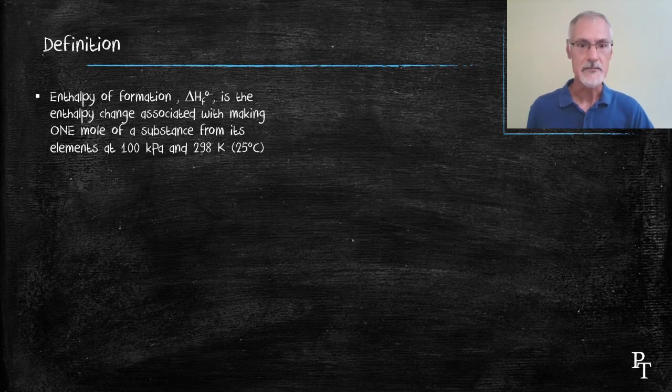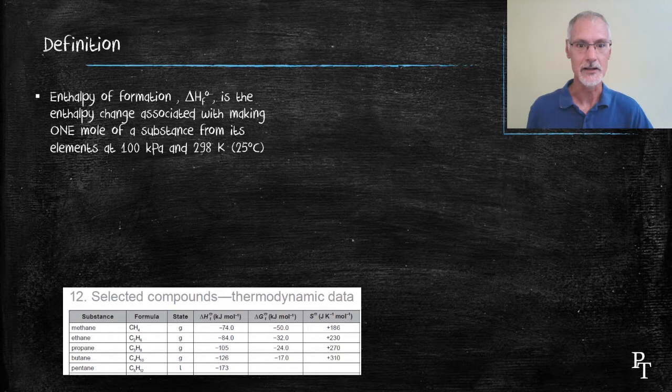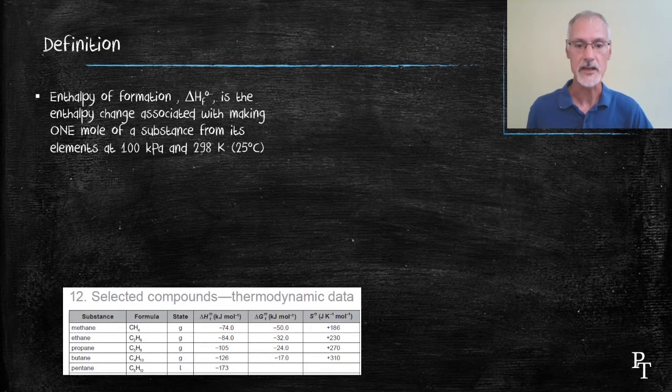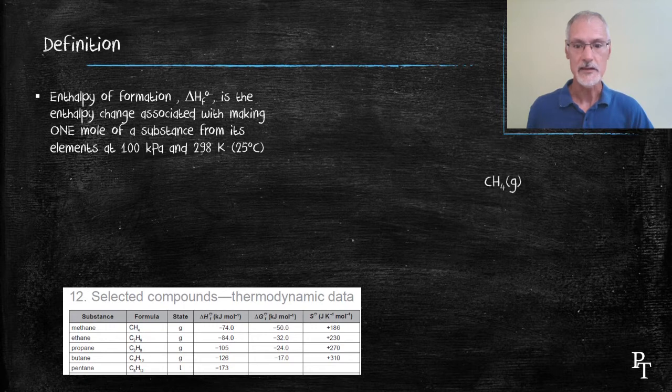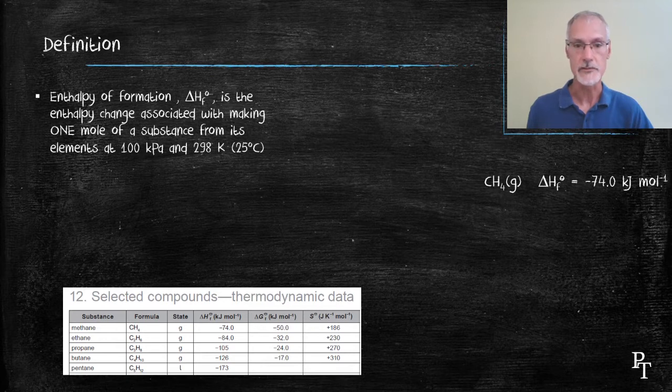As I said, it's associated with the energy making one mole of a substance, and some of these are available in your IB data booklet in table number 12. I'm going to take a look at the first substance that's mentioned there, which is methane. To make methane from its elements at room temperature and conditions, it's an exothermic reaction, releasing 74 kilojoules of energy.